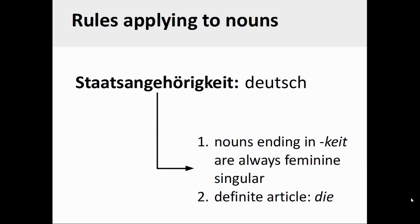The German noun Staatsangehörigkeit, for example, ends in the suffix -keit, which is always a characteristic of feminine singular nouns in German. The definite article of this noun, therefore, must be die.